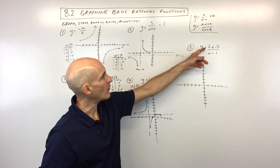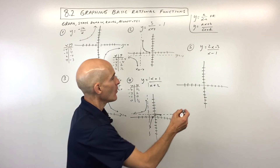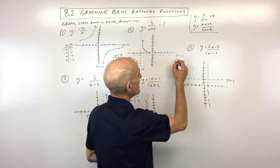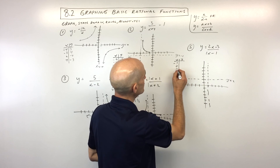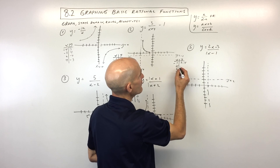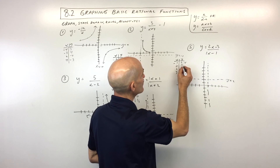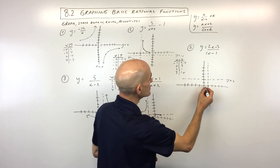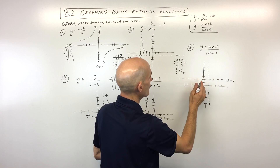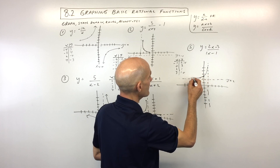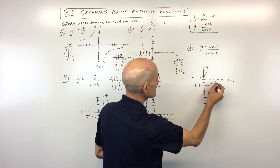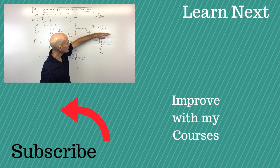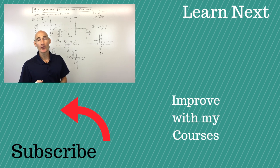For number 5, y equals 2x minus 3 over x minus 1: the vertical asymptote is x equals 1, and the ratio of coefficients 2 over 1 gives horizontal asymptote y equals 2. Using x = -1, 0, 2, 3: y values are 2.5, 3, 1, and 1.5. Domain is all real numbers except x cannot equal 1; range is all real numbers except y cannot equal 2. Review this video if needed, and I'll see you in the next lesson.